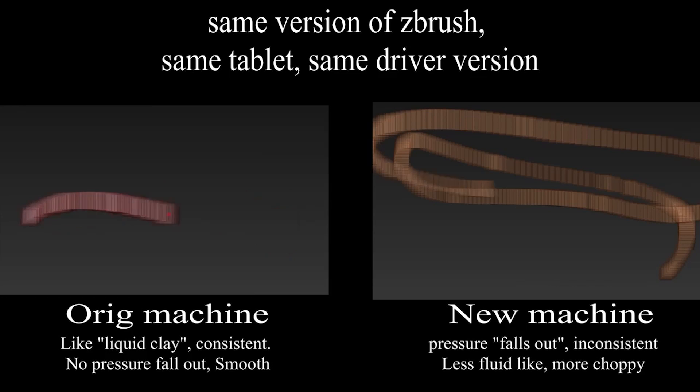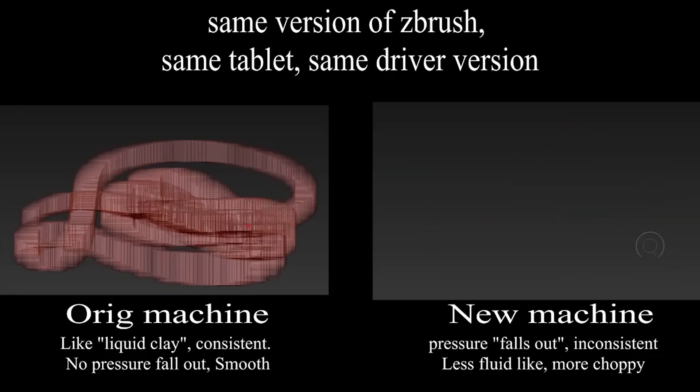The issues I was noticing were lag, very subtle micro-lag, or inconsistencies in the pressure sensitivity — the pressure sensitivity changing on me mid-stroke. Just a host of things that, when all combined, made the program incredibly difficult and frustrating to use. I've been using ZBrush for many, many years and hadn't noticed this problem before. In fact, I tried other machines and couldn't get this problem to replicate itself. For a very long time I was dealing with this with the assumption that I really couldn't fix it.